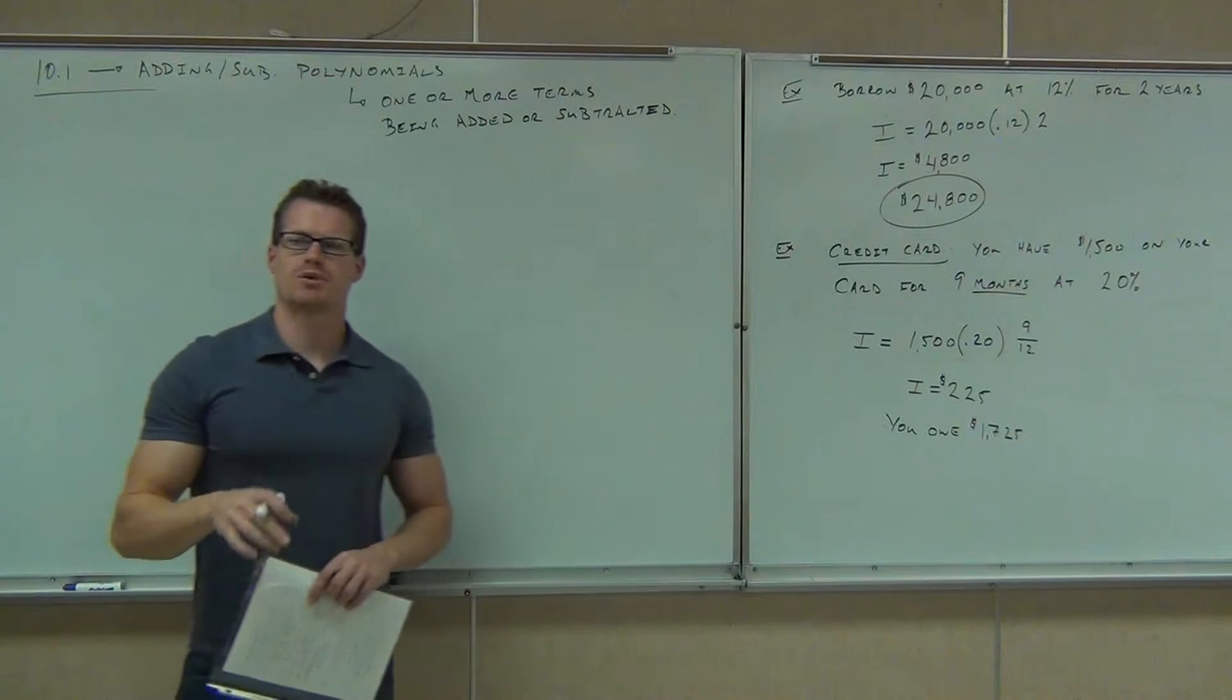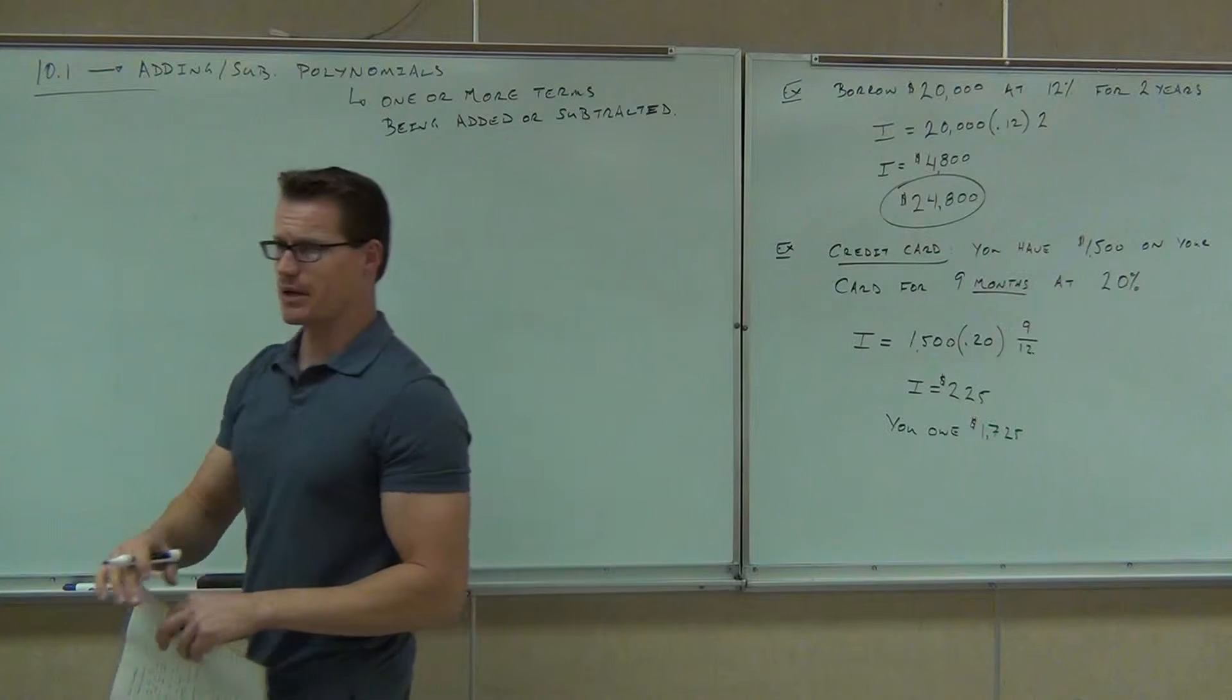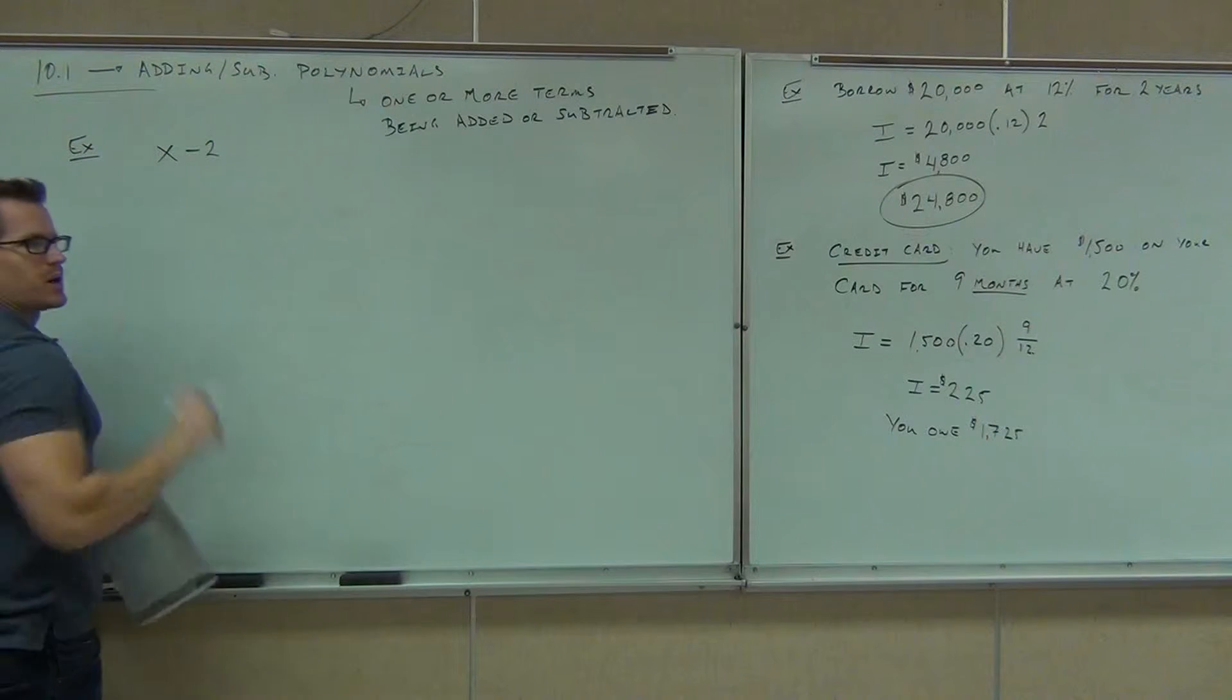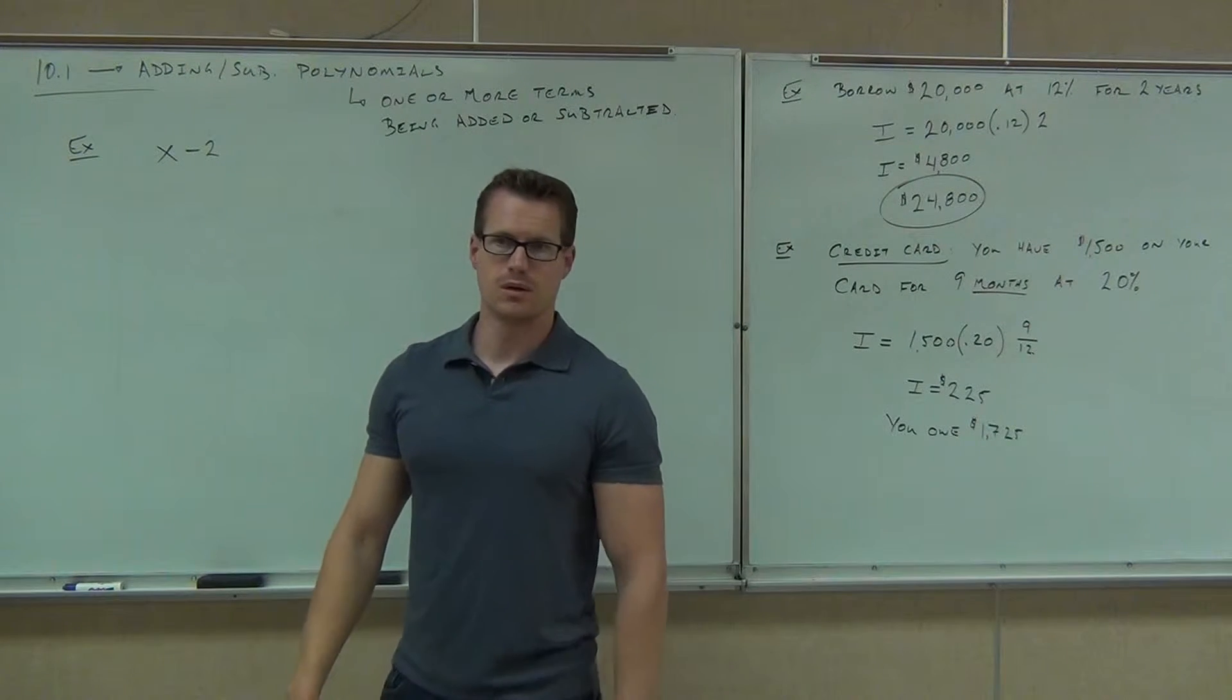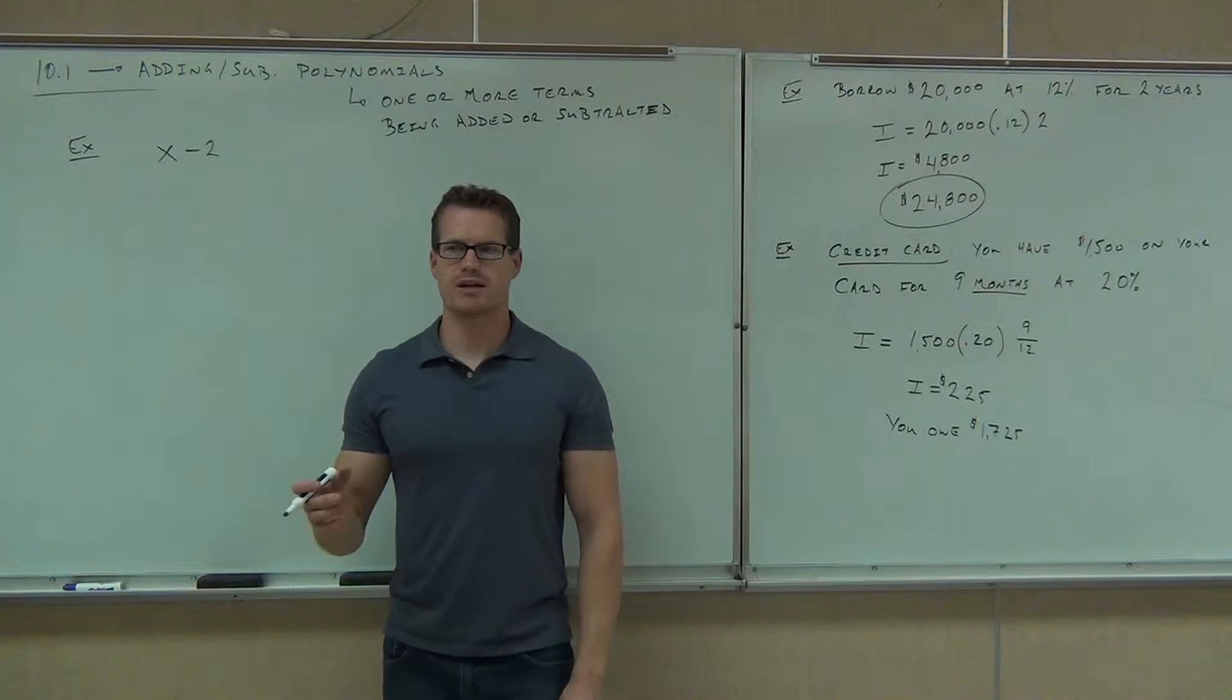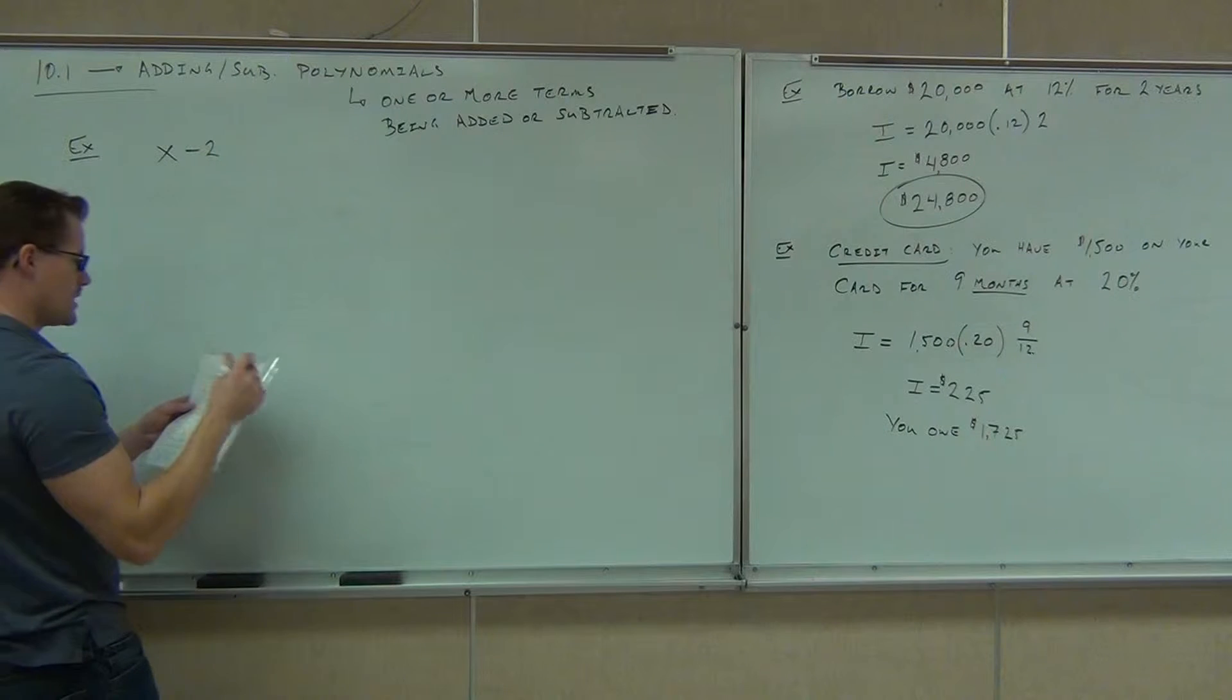Let me give you some examples of polynomials because I need you to be very good with identifying terms and coefficients. Now, we've done it before in Chapter 3 a long time ago. I just need you to be good at it. Let's take a look at some of these. x minus 2. x minus 2 is a polynomial. How many terms does that have? Two. What's the first term? What's the second term? Two. It goes with the sign. Negative 2. Are they like terms? No. Remember like terms? Like terms have the same variable raised to the same exponent.